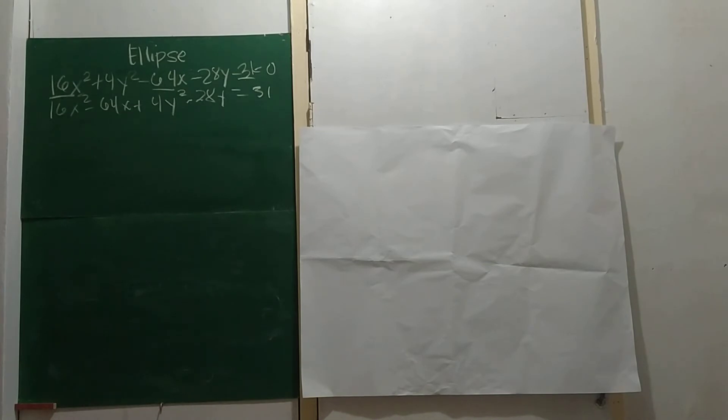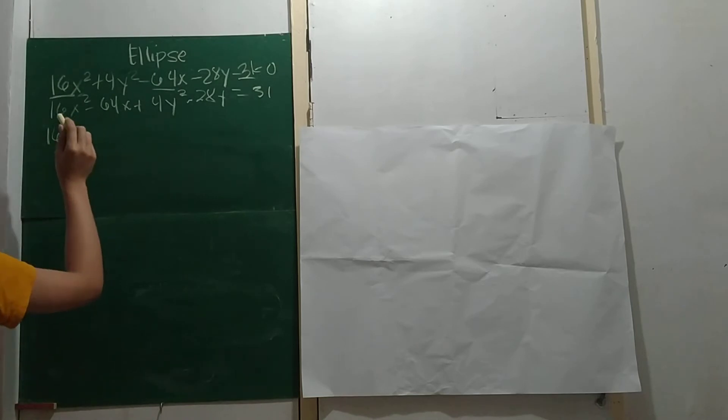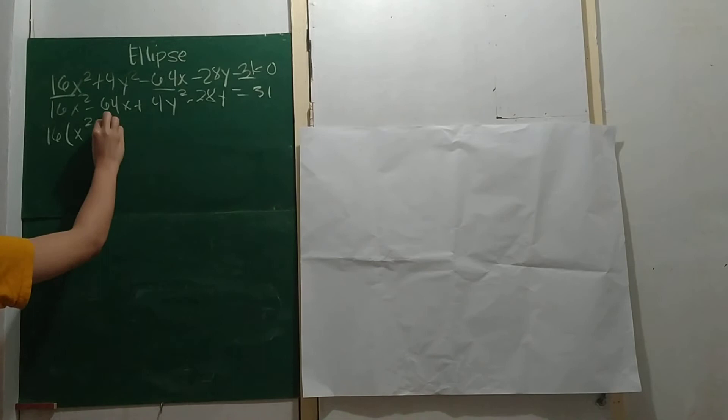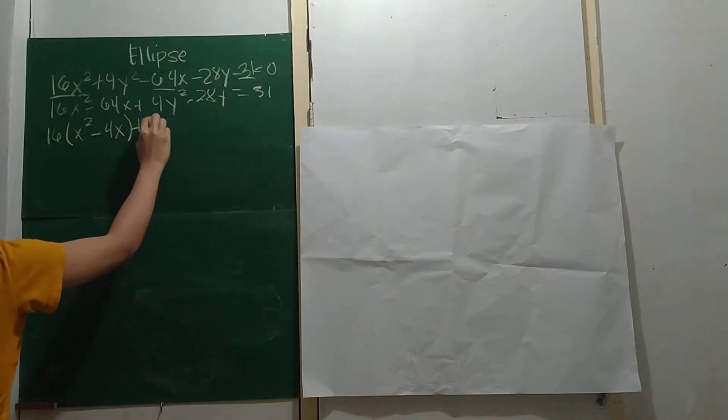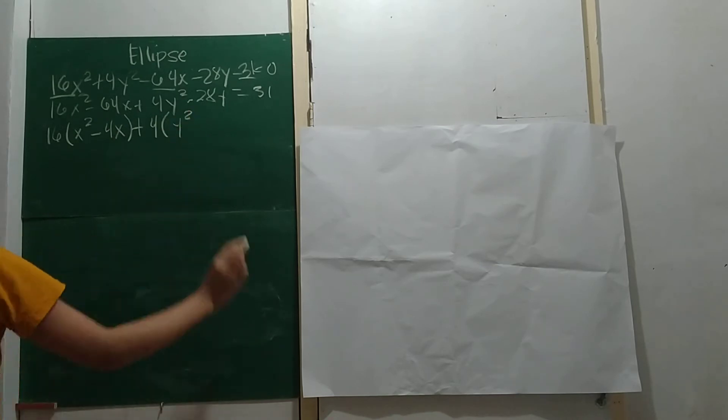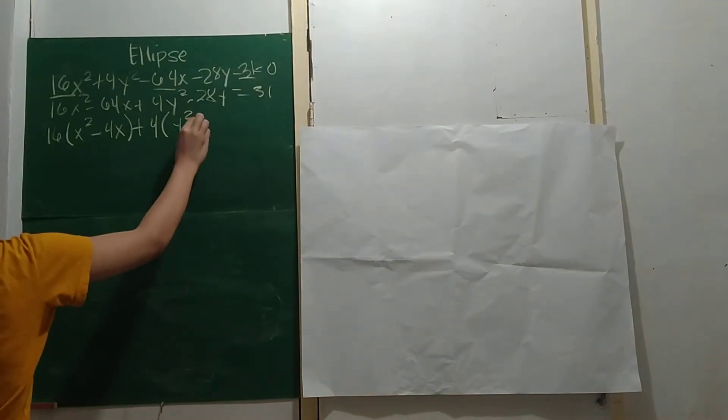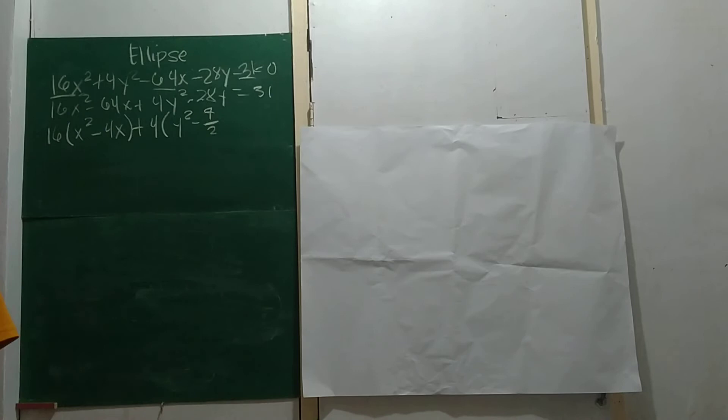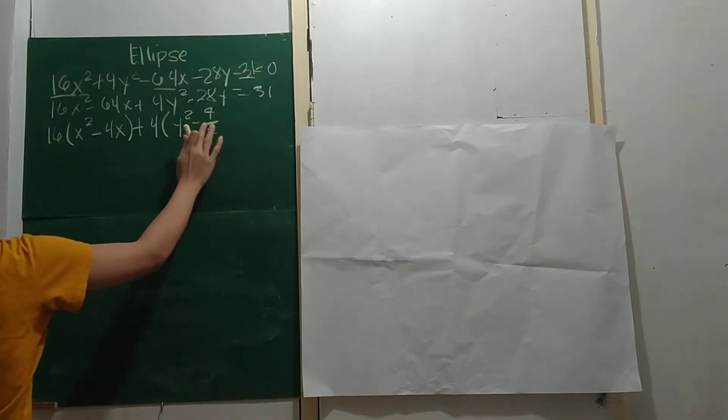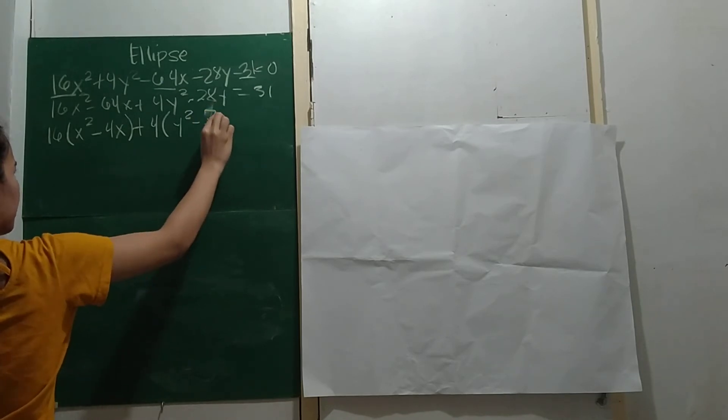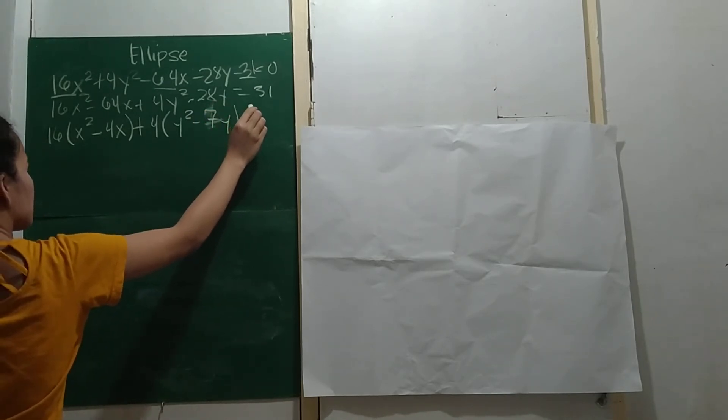Next, we need to complete the square. Let's pull out the 16 and copy x squared. The square root of 64 is 8, and 8 divided by 2 is 4, so we have 4x. Pull out the 4 from the y terms for y squared. Half of 28 is 7, so minus 7y equals 31.